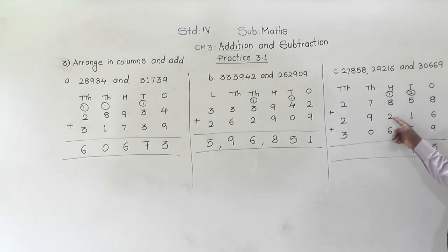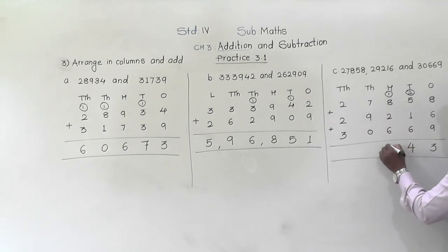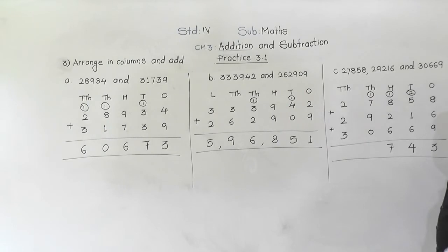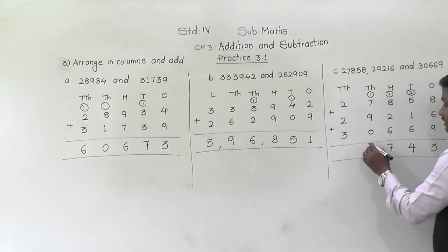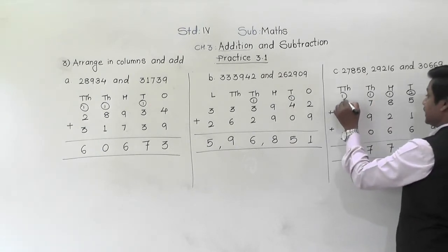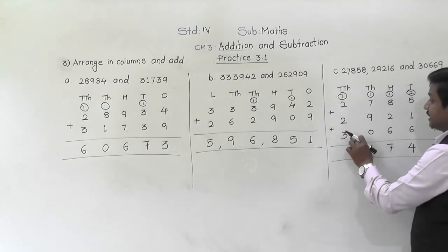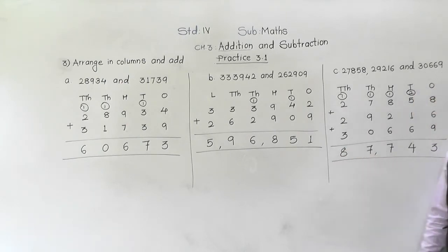8 plus 2 is 10, and 10 plus 6 plus 1 is 17 — 7 will come down, 1 will be carried. 9 plus 1 is 10, and 10 plus 7 is 17 — 7 will come down, 1 will be carried. 2 plus 2 is 4 and 3, plus 1 carried is 8. So 87,743 is the answer for these 3 numbers.